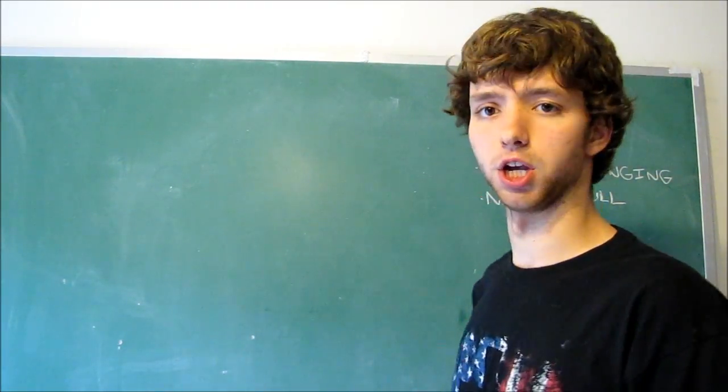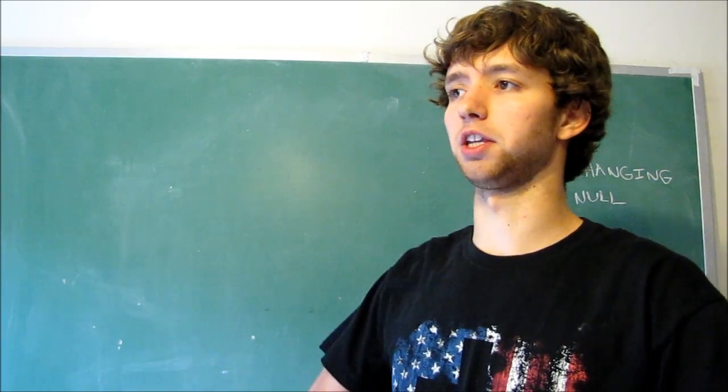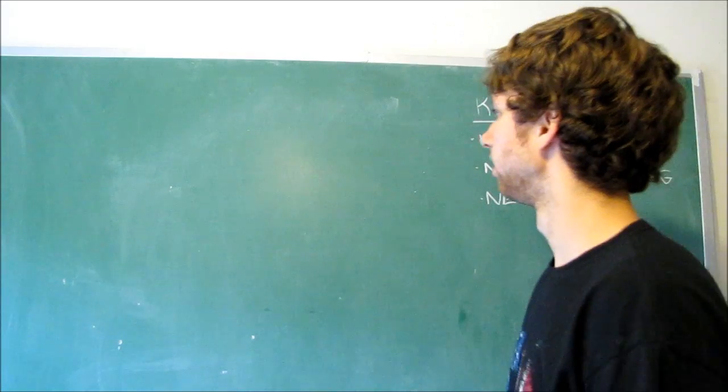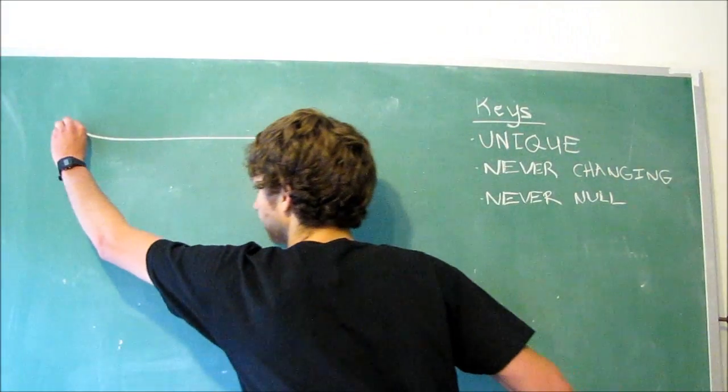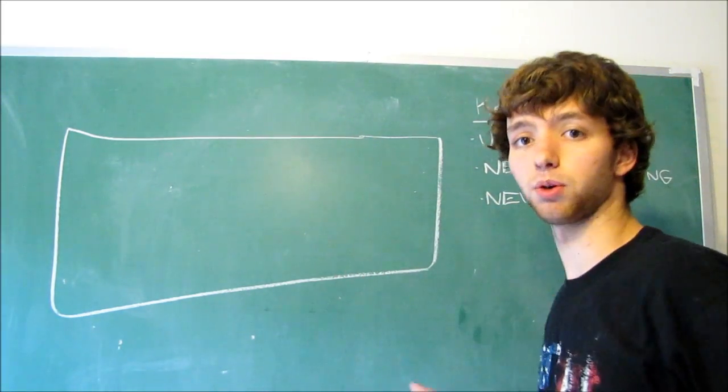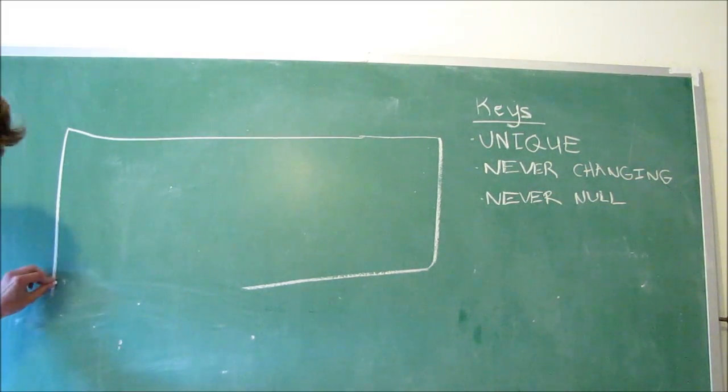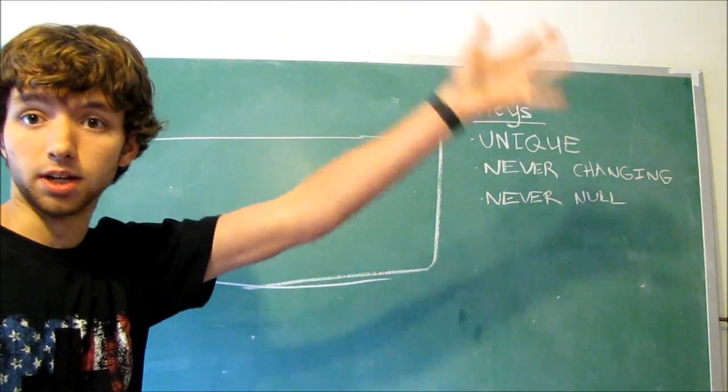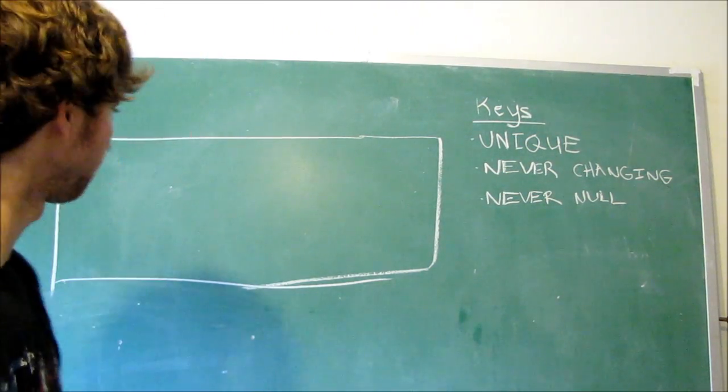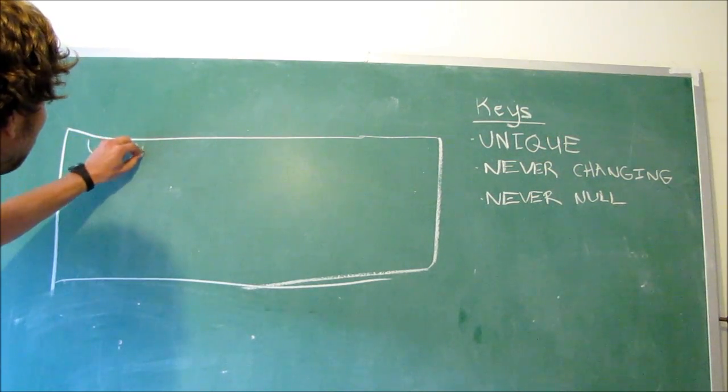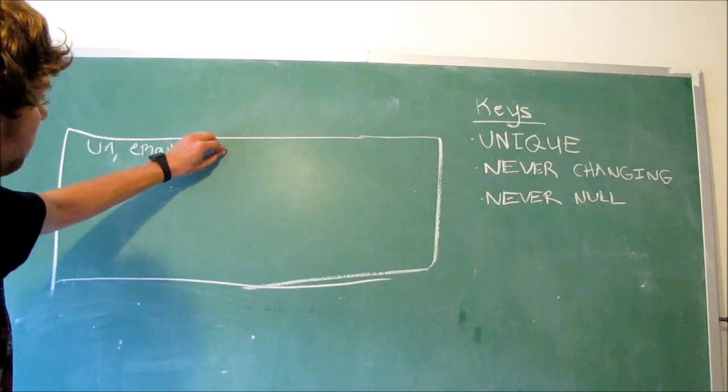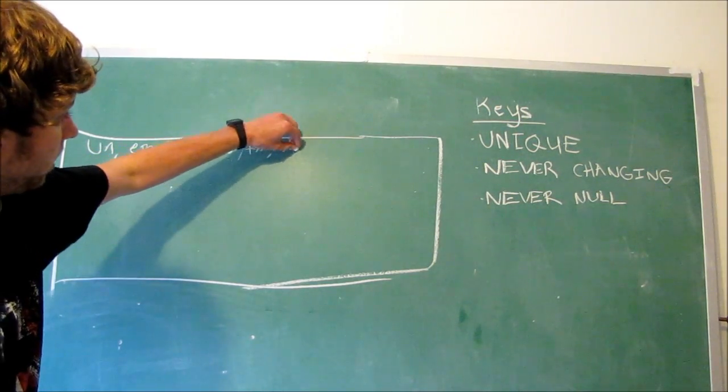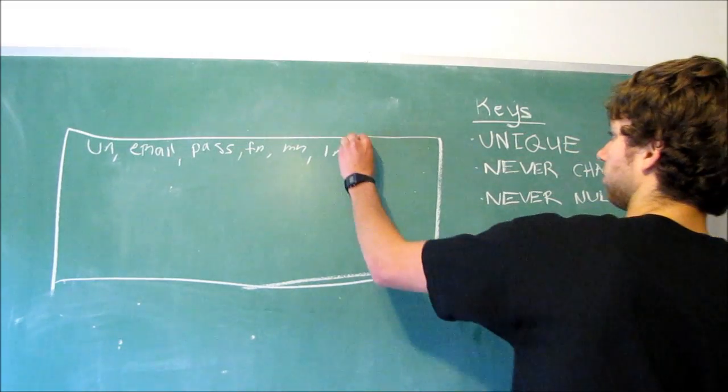But as for now, we'll just be using natural, practical columns that are already in the database rather than IDs. Let's learn about the super key. Let's say we have a table here. I'm going to put some columns in this table. We have a user table. We're going to have a username, email, password, then first name, middle name, last name, and birth date.